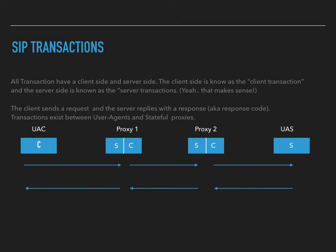Here's a little example. We've got a user agent client, proxy 1 and proxy 2 — both stateful proxies — and a UAS on the other side. When the UAC sends a request toward proxy 1, the UAC is using its client side and sending it toward the server side — that's one transaction. Proxy 1 to proxy 2, client side to server side, that's another transaction. Proxy 2 toward the UAS, again client to server. And then on the route back we've got responses going. Between each of these — between all of the client and server sides — those are each their own unique transactions.